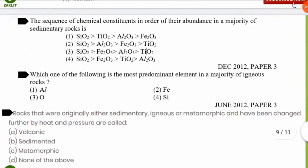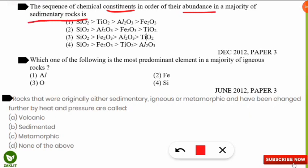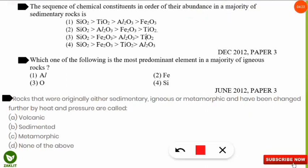The next question asks for the sequence of chemical constituents in order of abundance in sedimentary rocks. The correct option is option 2: SiO₂ is maximum in sedimentary rocks, followed by Al₂O₃, then Fe₂O₃, then TiO₂.